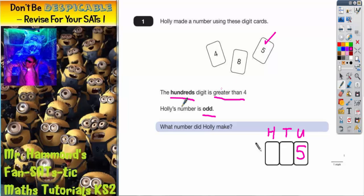We're also told that the hundreds digit is greater than four, so it can't be four because four isn't greater than four. So it has to be eight. The hundreds digit has got to be eight, so that's that one used.